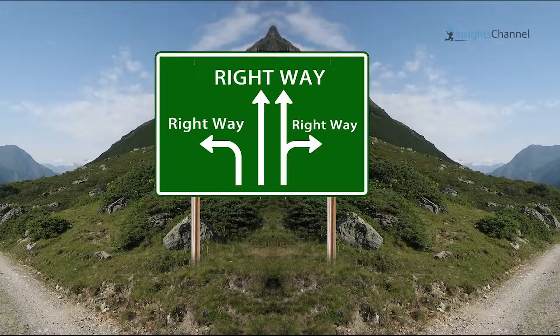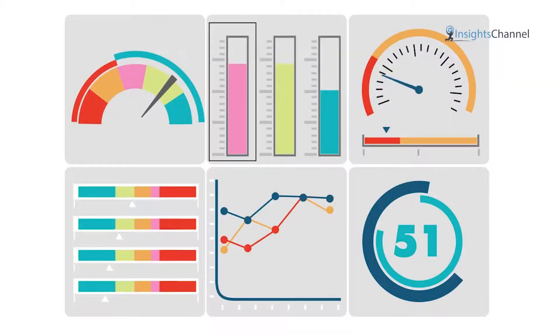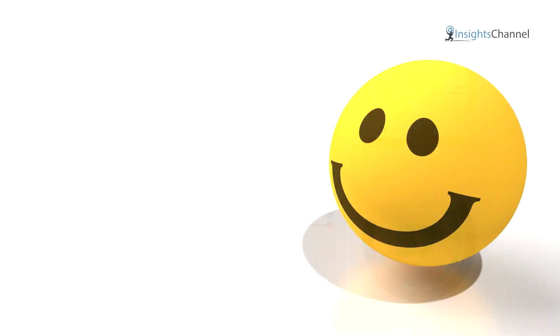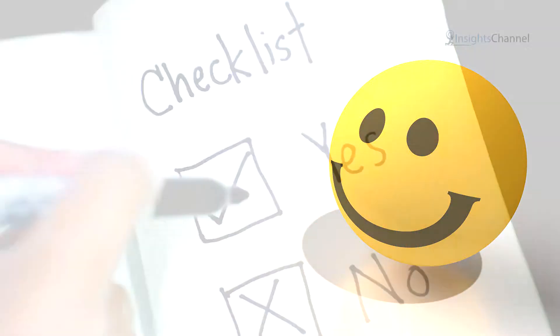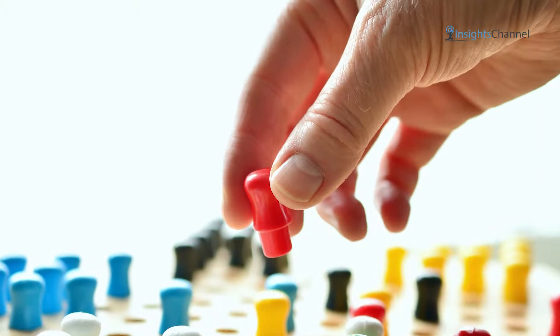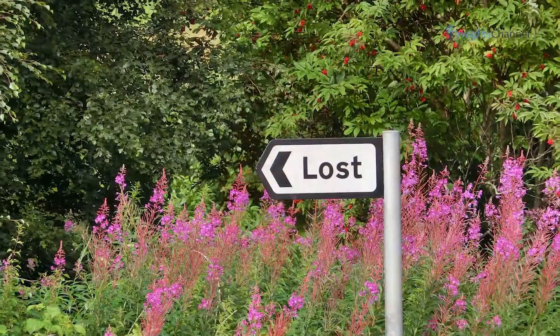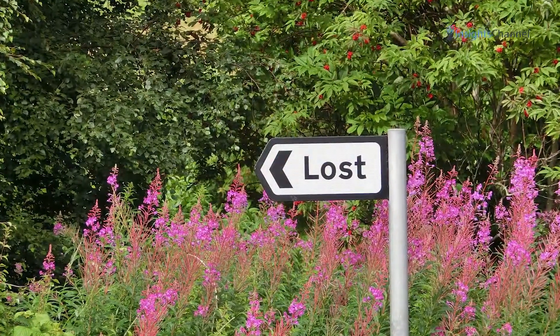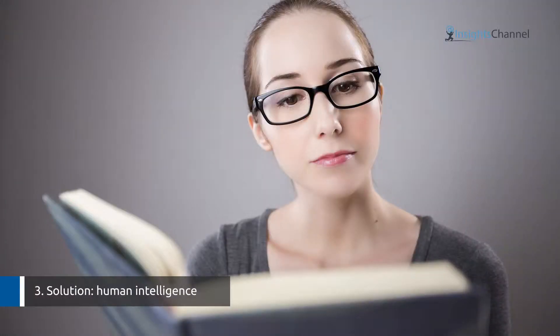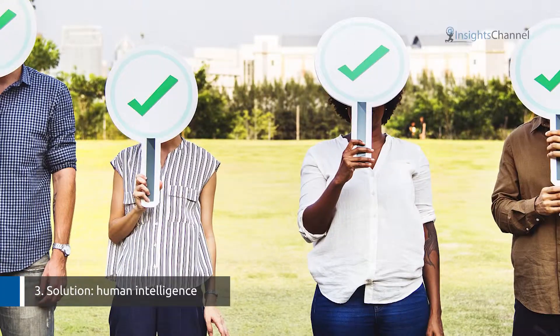Since emojis can deliver a range of sentiment, social media posts containing them might have vague meanings. If you let a computer-based analytics tool measure your social sentiment score, it will probably apply a default meaning for an emoji across all posts and neglect actual contexts. As a result, your sentiment score will be misinterpreted.